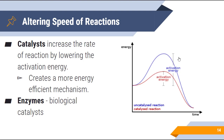Another way to alter the speed of the reaction is to add a catalyst. A catalyst increases the rate of the reaction by lowering the activation energy. Catalysts are never used up — they are continually used in a reaction, so a small amount of catalyst can significantly impact a chemical reaction. By lowering the activation energy, this creates a more energy-efficient mechanism, requiring less energy for the reaction to take place, so the reaction will happen faster.